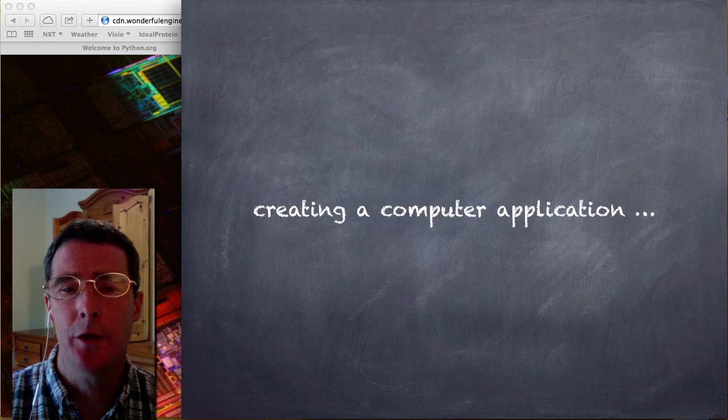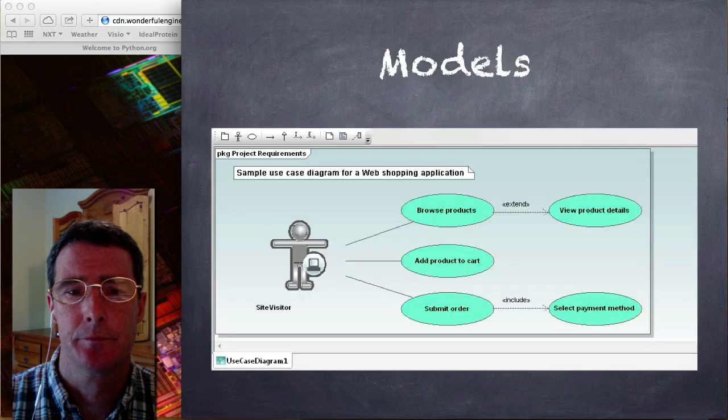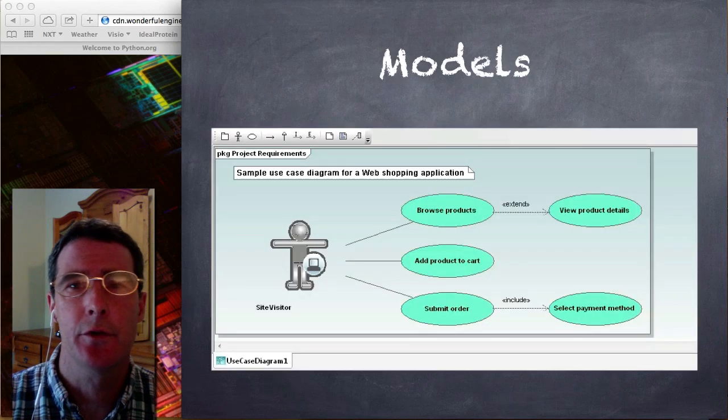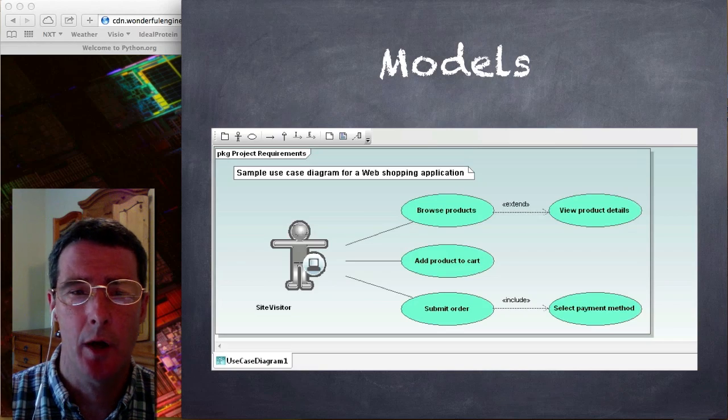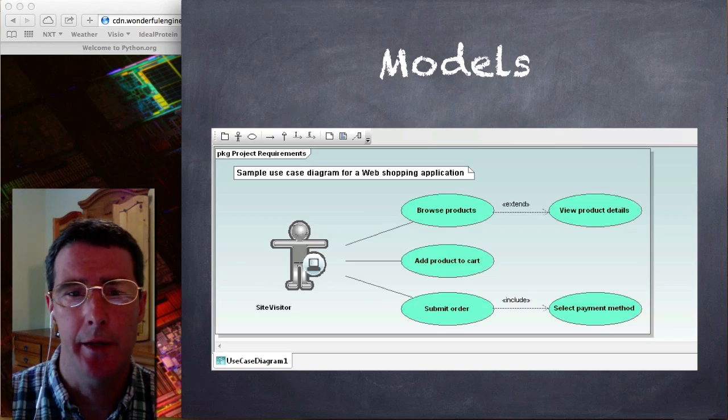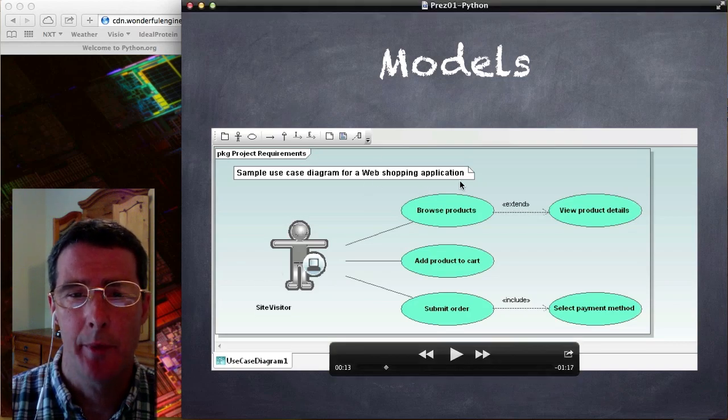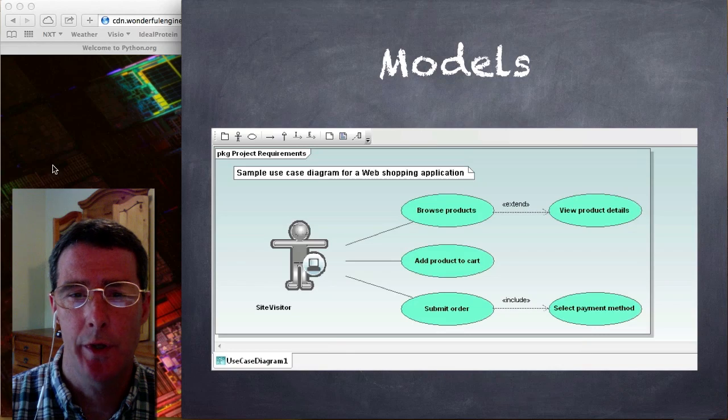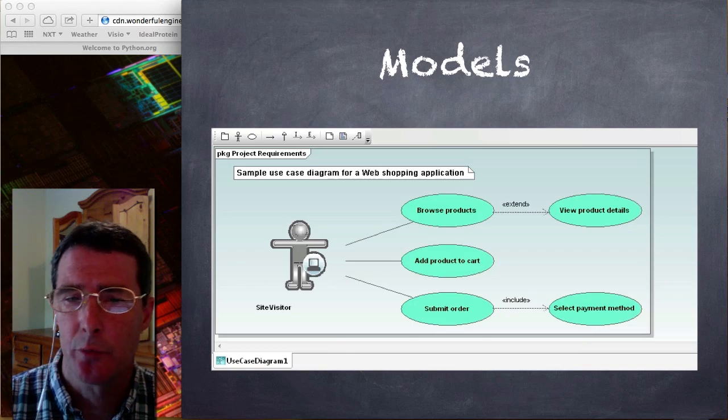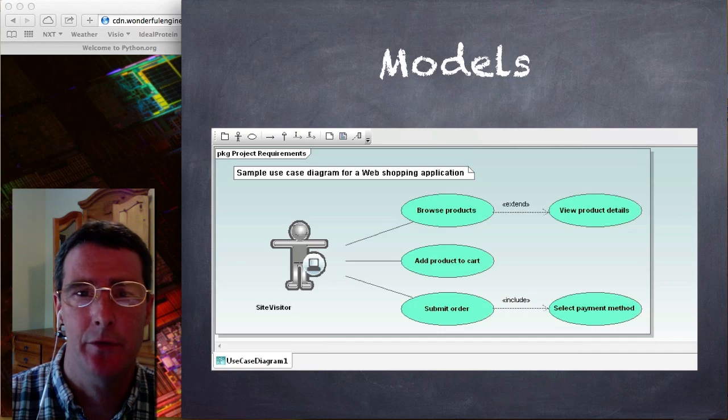So how do we create a computer application? One of the first things we need to do is if we have a problem, we need to model what we're trying to either solve or create. In this example, we're creating a web shopping application. So we need to browse products, add products to cart, submit orders, have a payment system. We need to create models of all those.